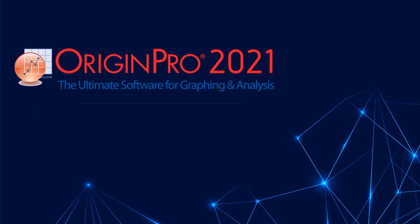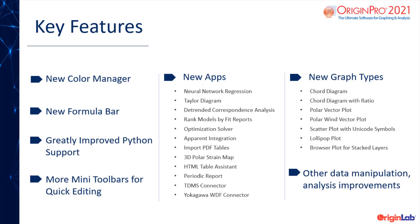Origin Lab is proud to announce the release of Origin and Origin Pro 2021, end of October 2020. Key new features in this version include a new color manager and formula bar, greatly improved Python support, more mini toolbars for quick editing, several new apps and graph types, and other data manipulation and analysis improvements.